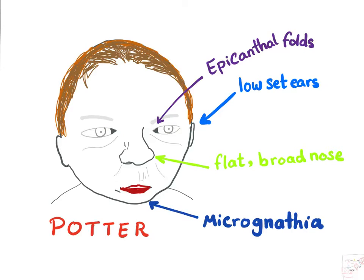So what are the features or signs and symptoms? We will have epicanthal folds, which lead to false squint or false strabismus. We'll also have low set ears, a flat broad nose, and micrognathia, which is a small jaw. The face is flat due to increased pressure on the baby from the uterus as a result of oligohydramnios.